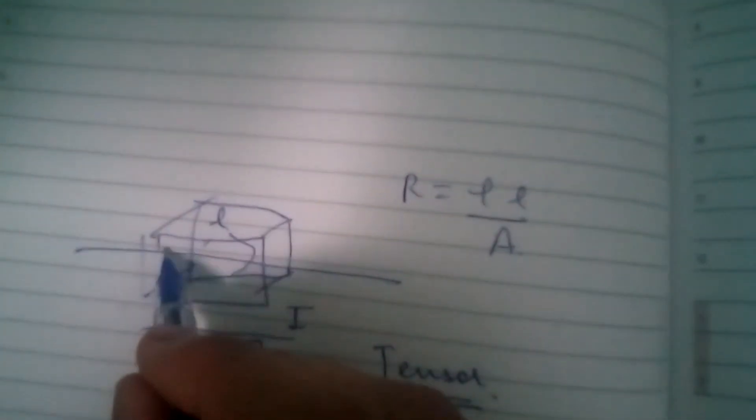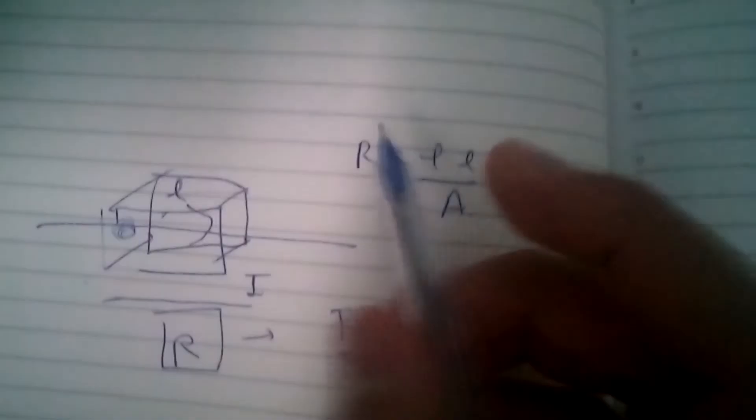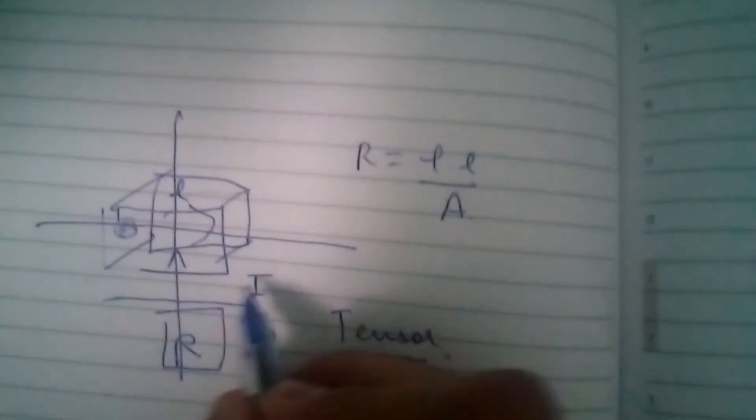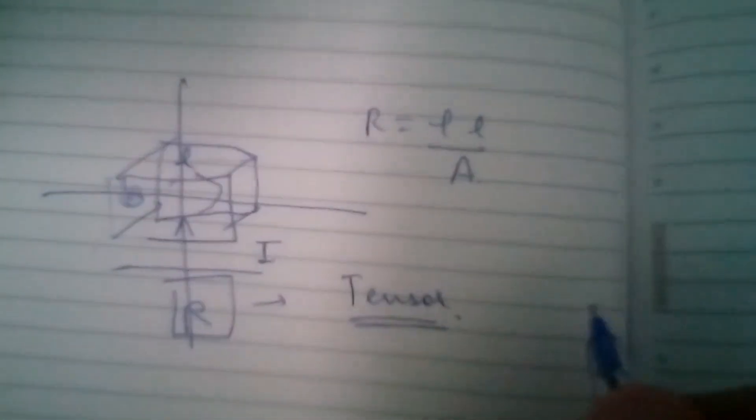The resistance depends upon the area of cross-section, which is this. When we calculate resistance from this, we get different results because the dimensions are different. So resistance is a tensor quantity, and that's all about tensors.